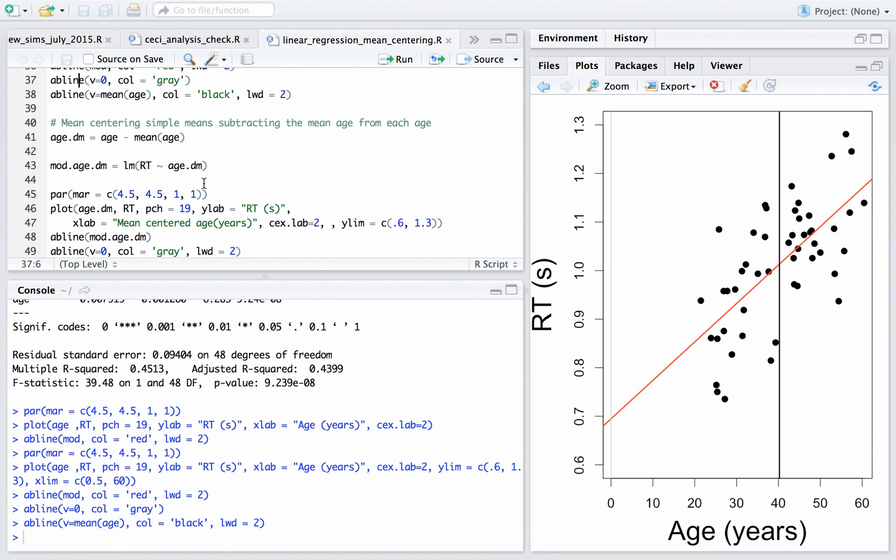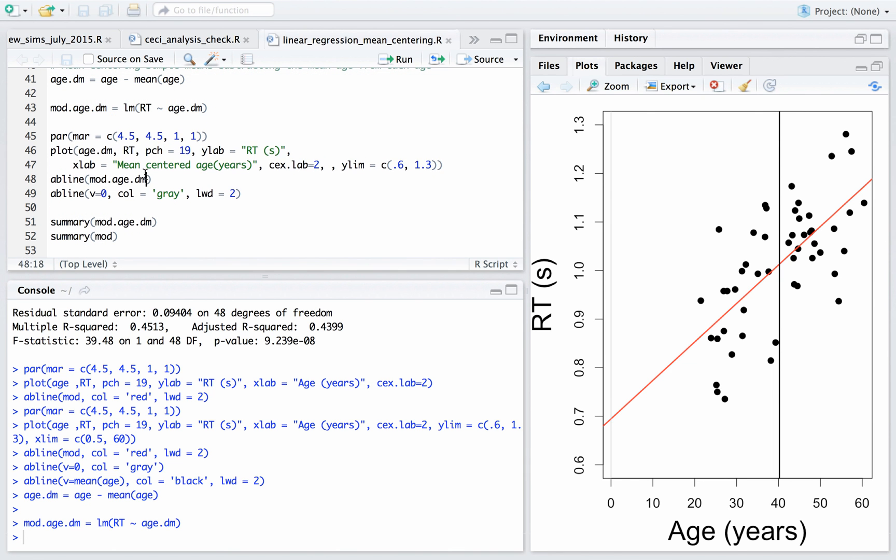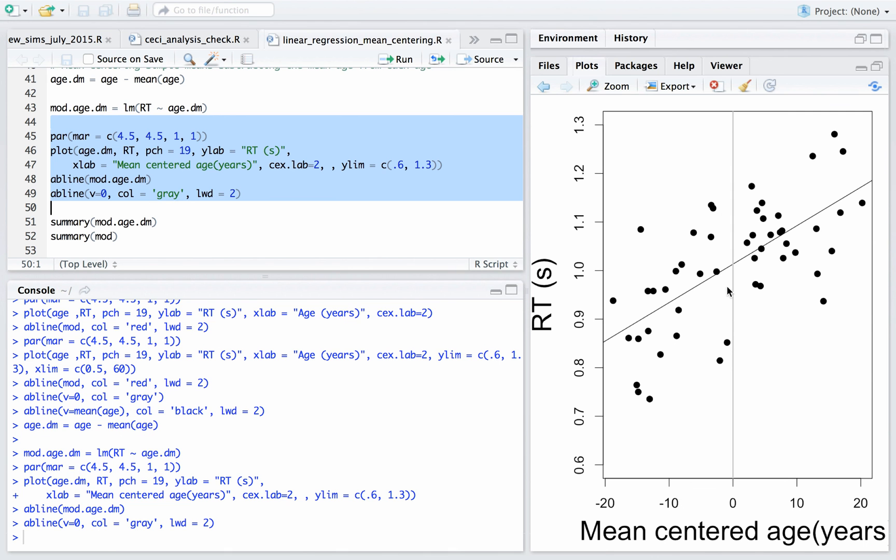Now I'm re-running the regression using mean centered age. So all I did was I took age minus the mean of age and I re-ran that regression. And this is the plot I just showed. It's the same plot as before, but I'm using mean centered age. So you can see here the y-axis is now centered at zero.